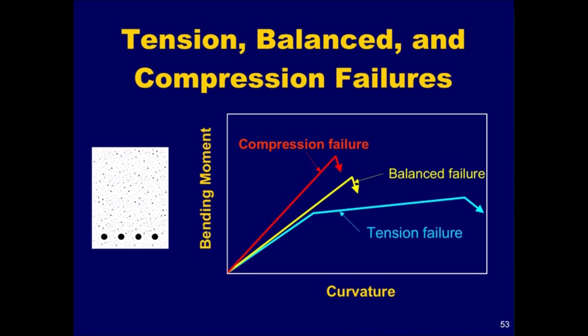To ensure that brittle failure does not occur, the code requires that all beams and one-way slabs have properties that ensure that tension failure will occur. This will be more fully discussed later in this section.